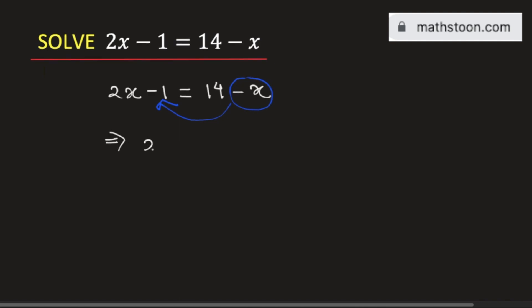So we will get 2x plus x minus 1 is equal to 14. Adding 2x and x, we will get 3x. So we will have 3x minus 1 is equal to 14.